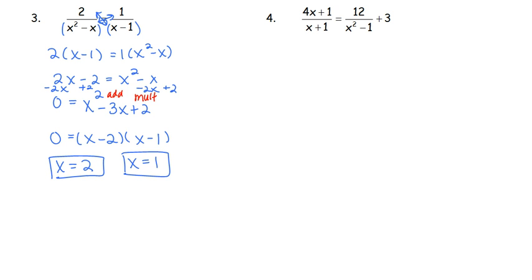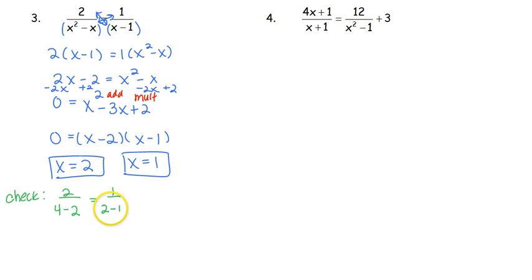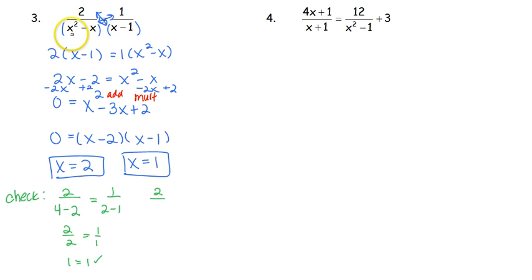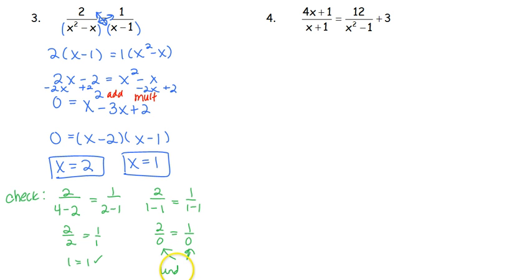We have two possible solutions: x equals 2 and x equals 1. We check both by going back to the original equation. For x equals 2: 2 over 4 minus 2 equals 1 over 2 minus 1, giving 2 over 2 equals 1 over 1, so 1 equals 1 — it works. For x equals 1: we get zeros in the denominator, which means undefined. If it is undefined, it is not a solution. So number 3 has only one solution: x equals 2.